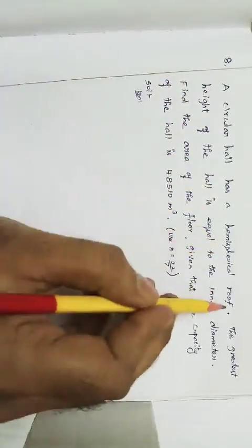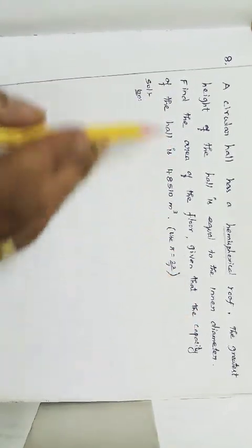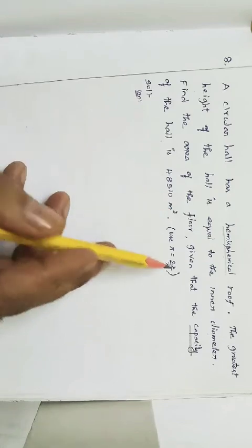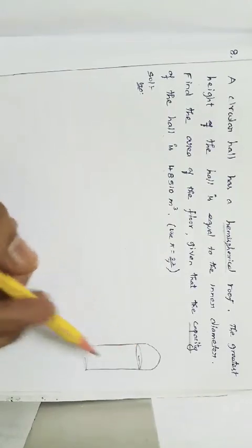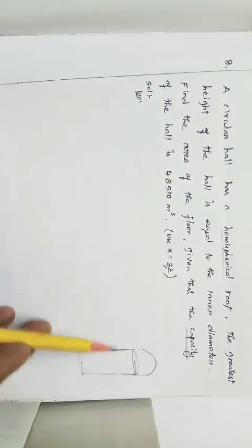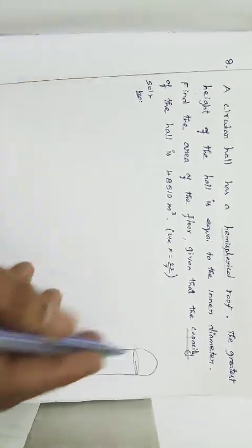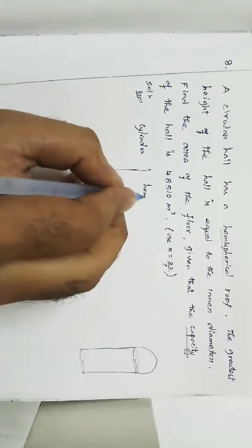Problem number 8: A circular hall has a hemispherical roof. The greatest height of the hall is equal to the inner diameter. Find the area of the floor, given that the capacity of the hall is 48510 cubic meters. Use π = 22/7. The hall involves two shapes: a cylinder and a hemisphere.